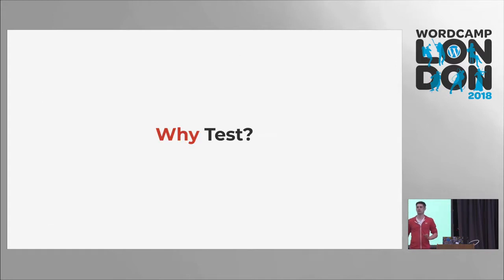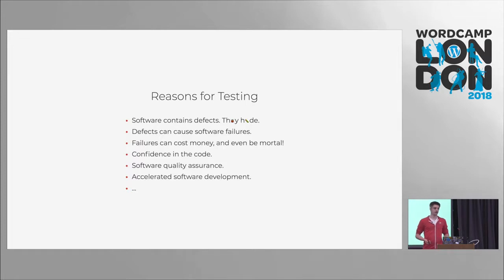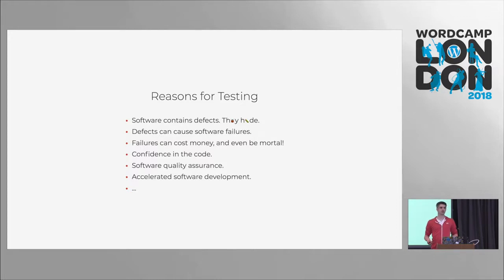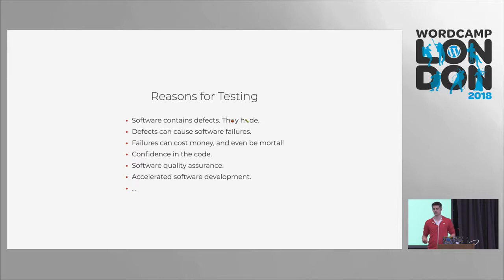When we know something is there, we might ask why it's there, and why should we care or do something about it? There are reasons for testing. One is software contains defects and they hide. These defects may cause failures in our program. Depending on what we're doing with our software, these failures might even kill people, and they definitely can cost you money. Testing our software gives us confidence in the code — confidence in the functionality but also the quality. Testing does not improve quality; it tells you about the current quality and then you can do something about it. And when you test and you do it right, it might actually speed up your development process.